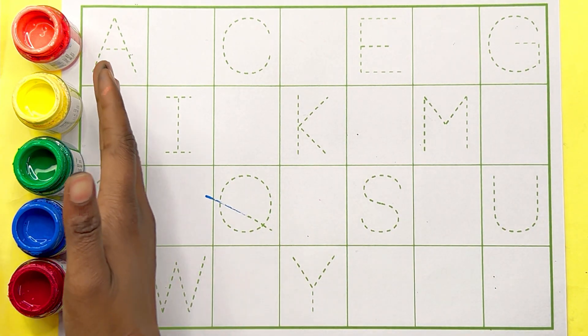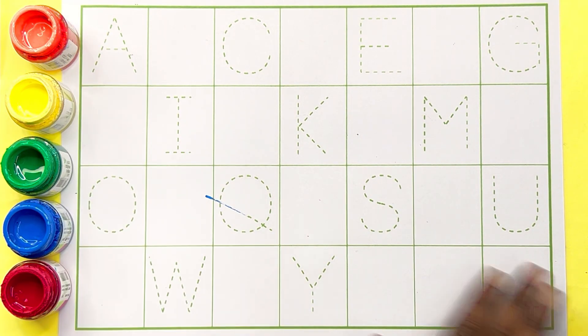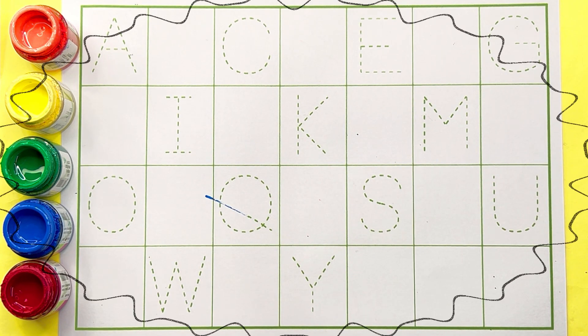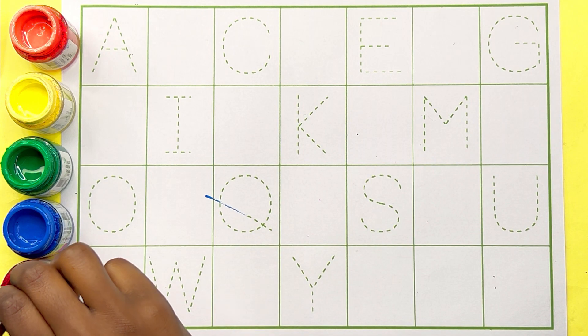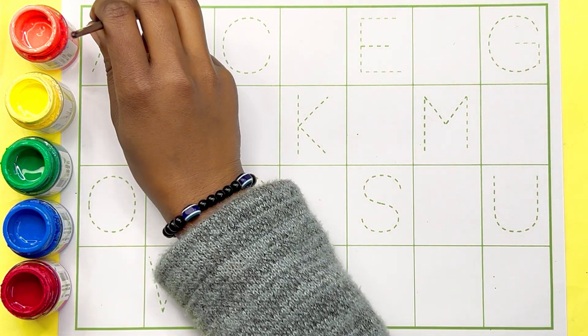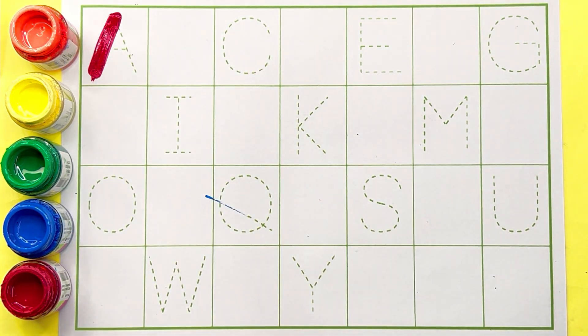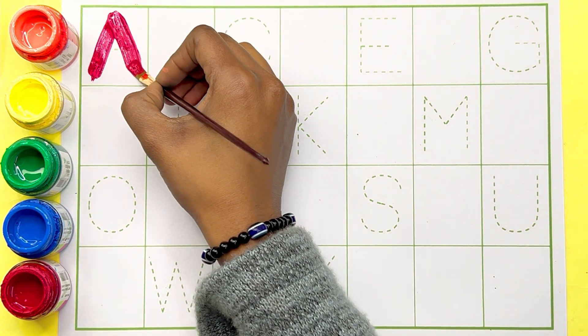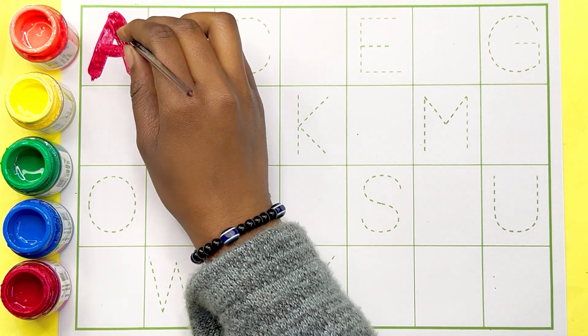So kids, let's start alphabets. Red color A. A for apple.